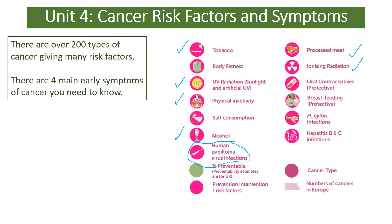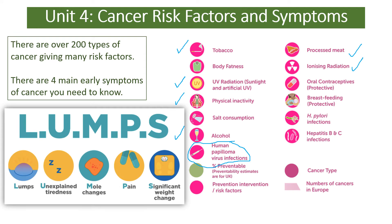There are five early symptoms you need to know for cancers. A useful way to remember them is the word LUMPS: L stands for lumps themselves, such as breast lumps in breast cancer; U stands for unexplained tiredness; M stands for changes in moles, often linking to skin cancer; P stands for unexplained pain; and S stands for significant weight change. These could be signs of cancer or many other diseases, but they're reasons to go to the doctor.